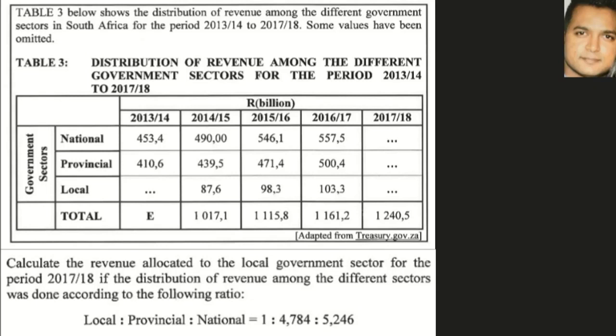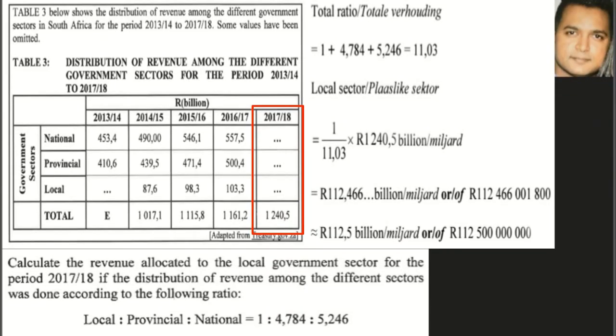The next question asks us to calculate the revenue allocated to the local government sector for the period 2017-2018, if the distribution of revenue among the different sectors was done according to a given ratio. This is simply a ratio question — similar to boys-and-girls or sports-team ratio problems, except here there are three aspects: local, provincial, and national.